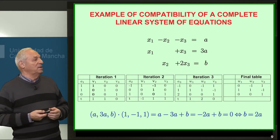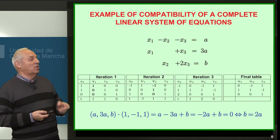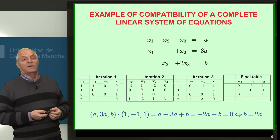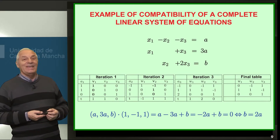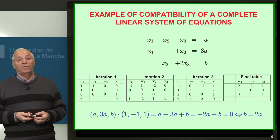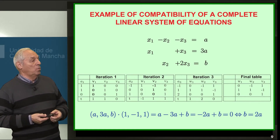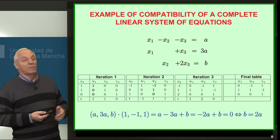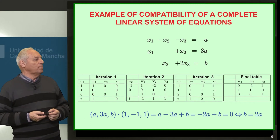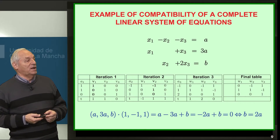Next, we consider the second column vector, obtained from the coefficients of x2 in all equations. In the first equation it is minus 1, in the second there is no x2 so it is 0, and in the third the coefficient is 1 — so the vector is (−1, 0, 1). We enter it in iteration 2 and pivot. Then we take the third column vector with coefficients of x3, which are (−1, 1, 2), and pivot.